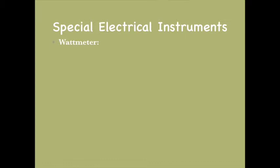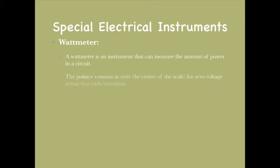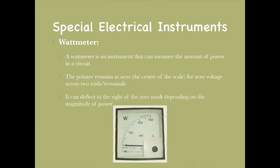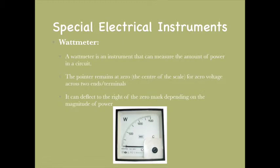The fourth instrument is the wattmeter, which is an instrument that can measure the amount of power consumed by a circuit. The pointer remains at zero for zero voltage across the terminals and can deflect to the right of the zero mark depending on the magnitude of power. A diagram of the wattmeter is shown below.